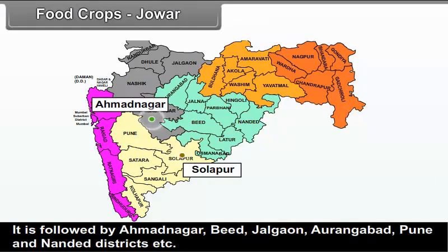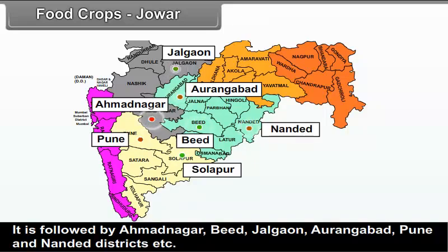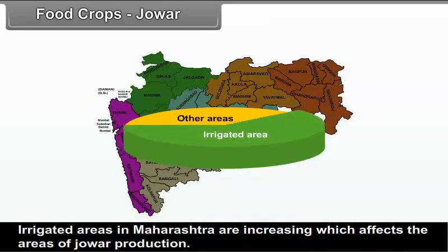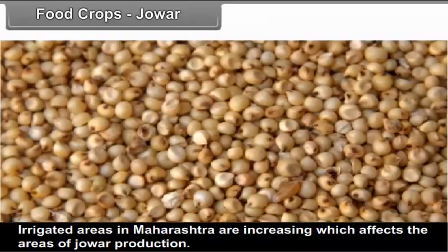Solapur is followed by Ahmadnagar, Bid, Jalgaon, Aurangabad, Pune, and Nandurbar districts. Irrigated areas in Maharashtra are increasing, which affects the areas of jowar production. The land formerly used for jowar is now being used for commercial crops.